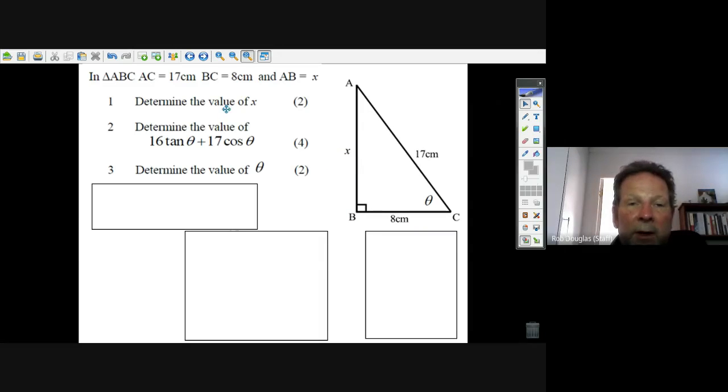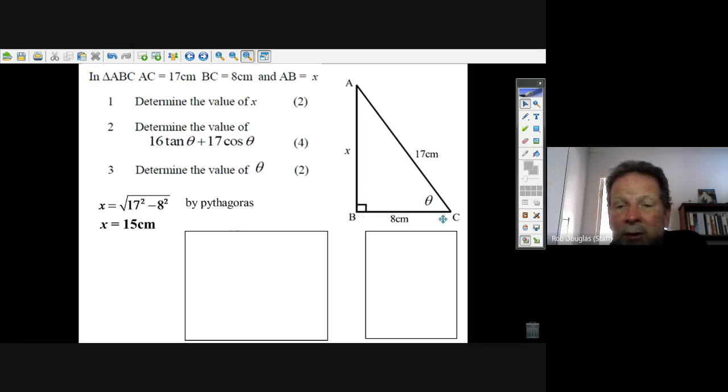The first thing is to determine the value of X. You don't know what theta is, so you can't use trigonometry yet. You have to use Pythagoras: X² + 8² = 17². Square the long side, square the short side, subtract them, and take the square root.